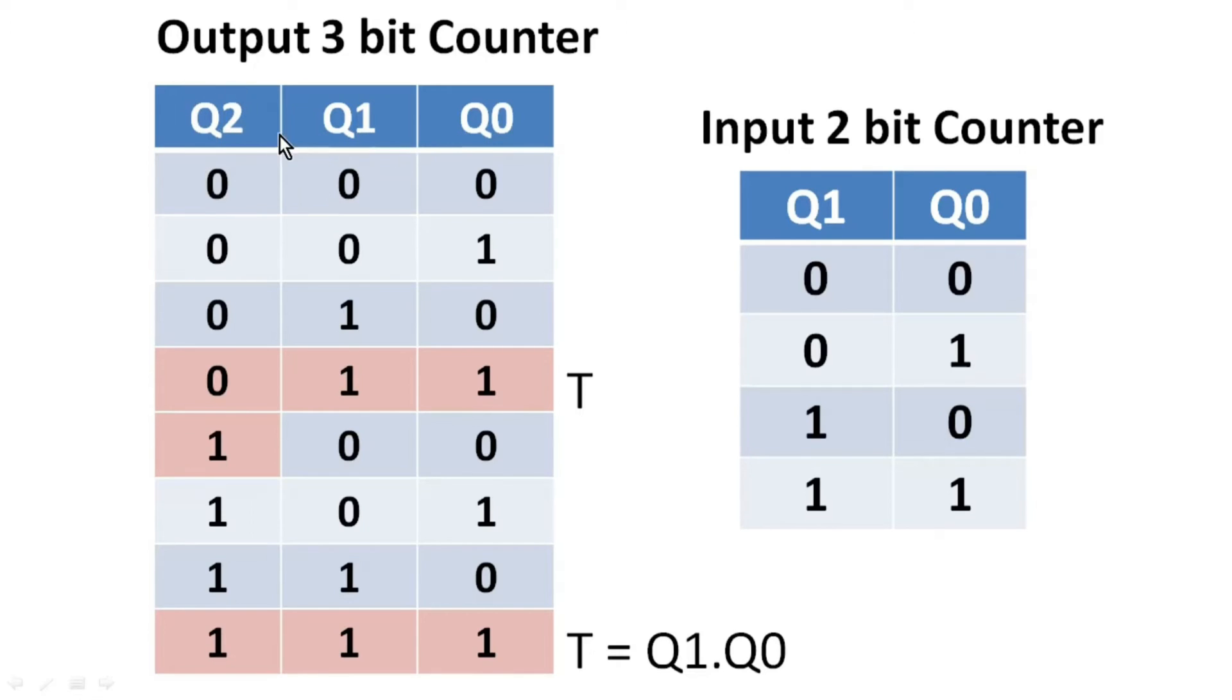If we give some attention on this truth table, we can very clearly see that when this 2-bit counter rolls over, then the value of Q2 toggles. In other words, we can say that when Q1 and Q0 both are high, in the immediate next cycle Q2 has to toggle its value.